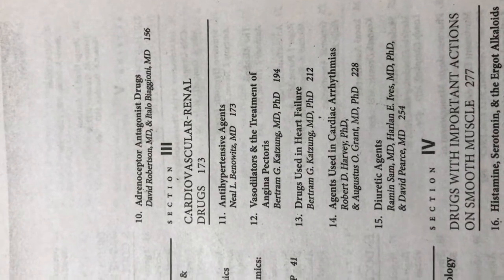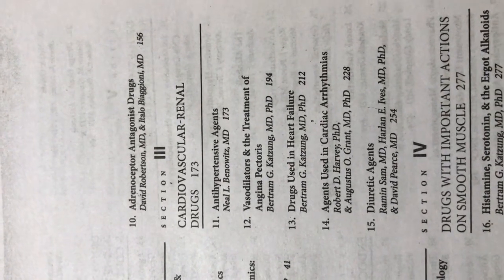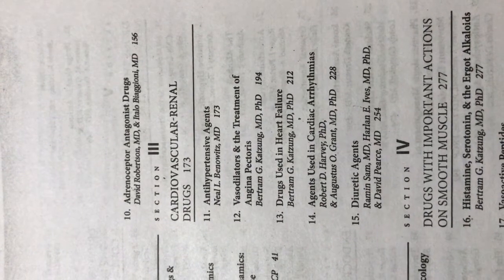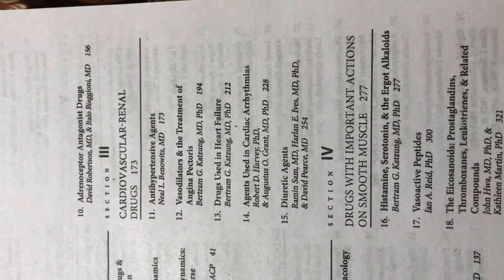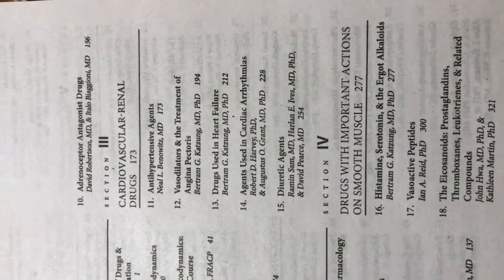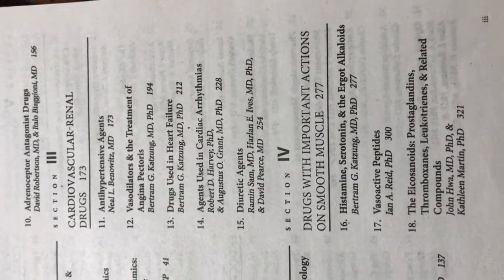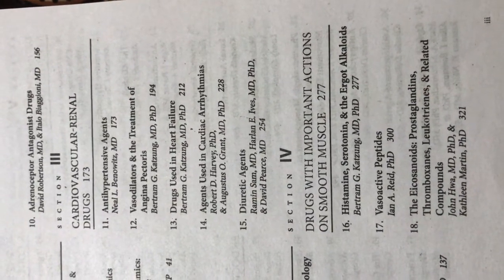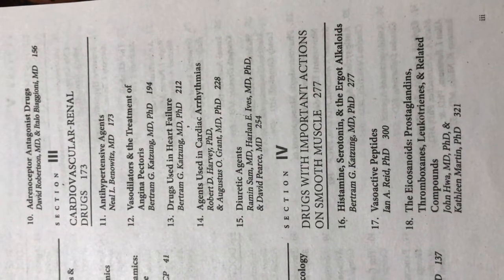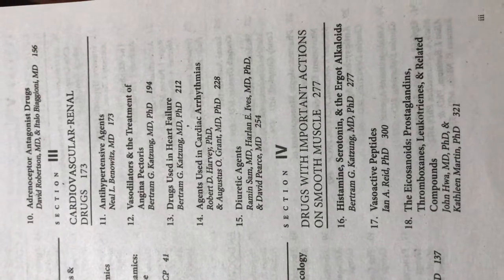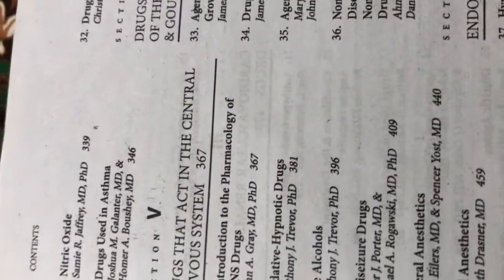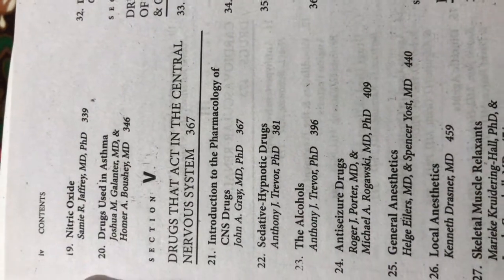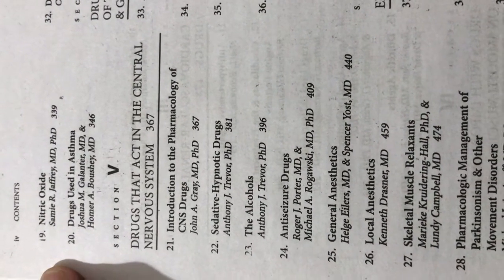In section three we have cardiovascular and renal drugs. Chapter eleven covers antihypertensive agents, twelve has vasodilators and treatment of angina. Chapter thirteen covers drugs used in heart failure, fourteen covers drugs used in cardiac arrhythmias, and fifteen covers diuretic agents. Section four covers drugs with important actions on smooth muscle — for example, histamine, serotonin and alkaloids, chapter seventeen vasoactive peptides, and chapter eighteen eicosanoids, prostaglandins, thromboxanes, leukotrienes and leukotriene compounds. Chapter nineteen covers nitric oxide.